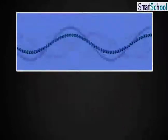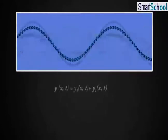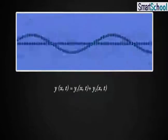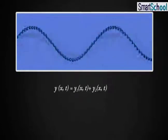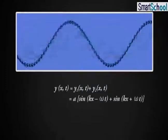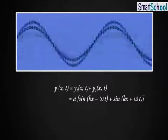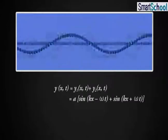The resultant wave on the string is according to the principle of superposition y(x,t) is equal to y₁(x,t) plus y₂(x,t), is equal to a sin(kx - ωt) plus sin(kx + ωt).